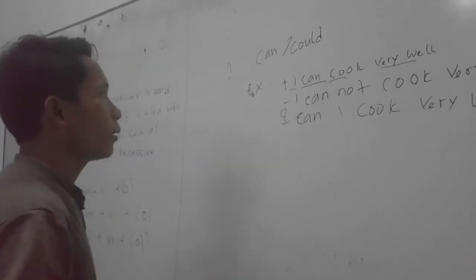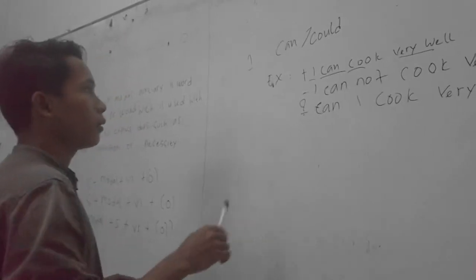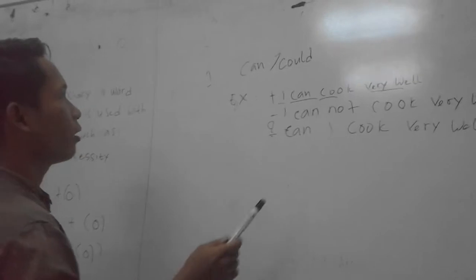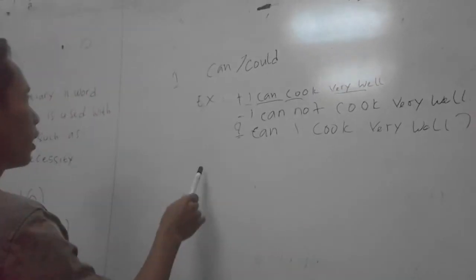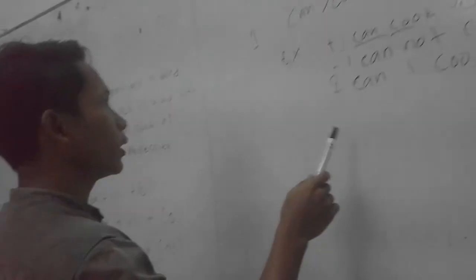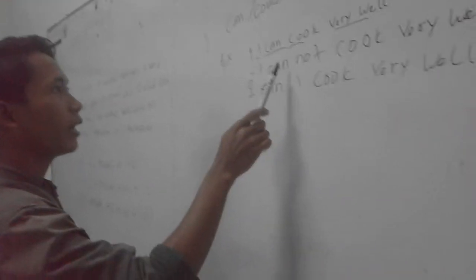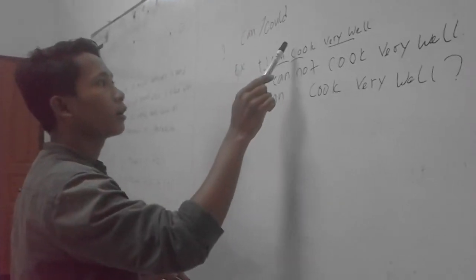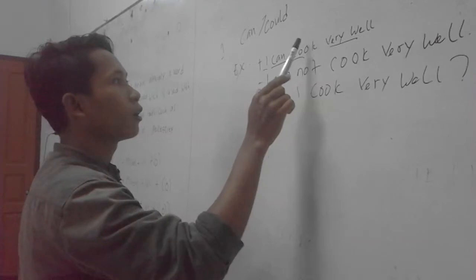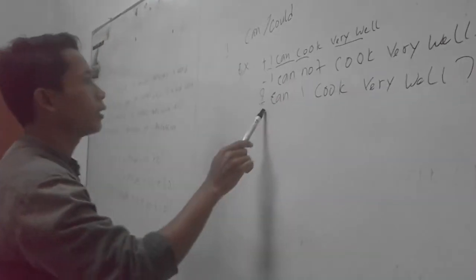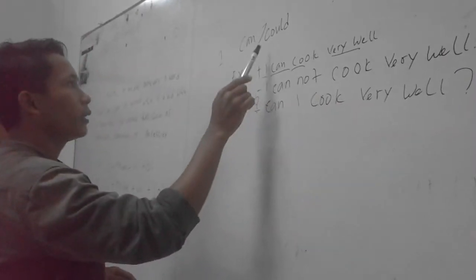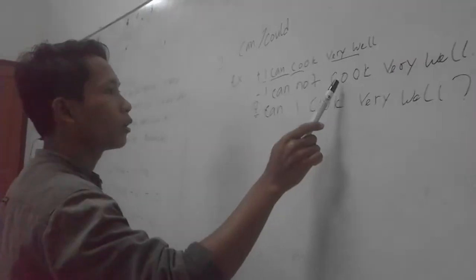Okay, I will change. Okay. I can, I give an explanation about can or food. For example, I think positive is, I can cook very well. Or, I cook very well. Negative, I can, I cannot cook very well. Or, I cook not cook very well.